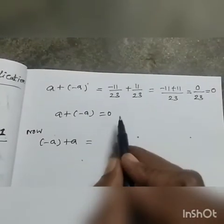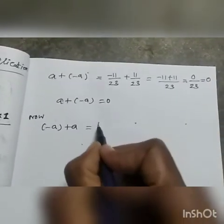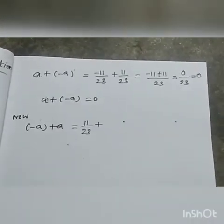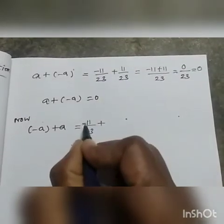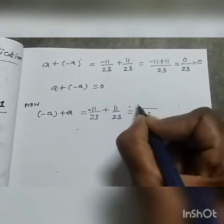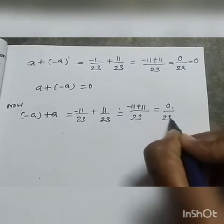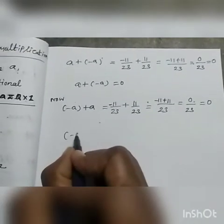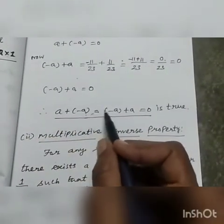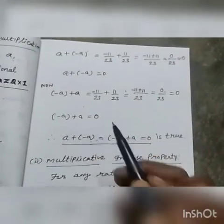So A + (-A) = 0: the -11 and +11 cancel, giving 0/23 = 0. Also -A + A = 0. Therefore A + (-A) = (-A) + A = 0 is true — here also 0, and here also 0 only.